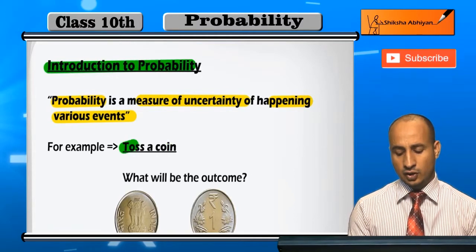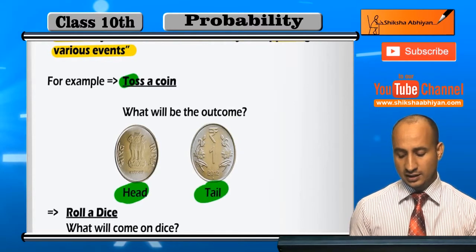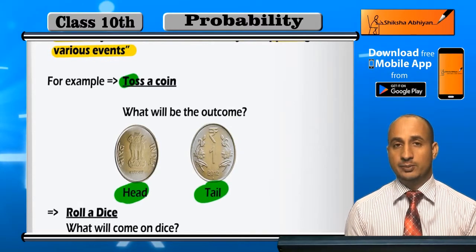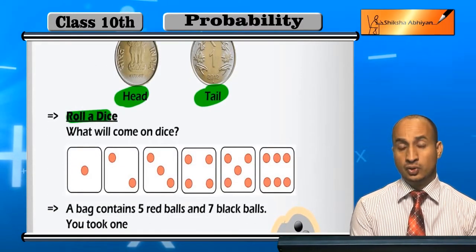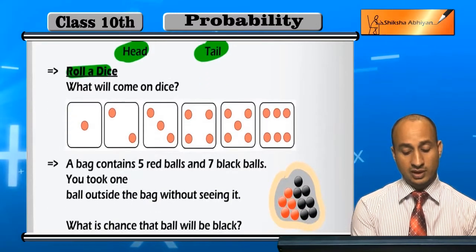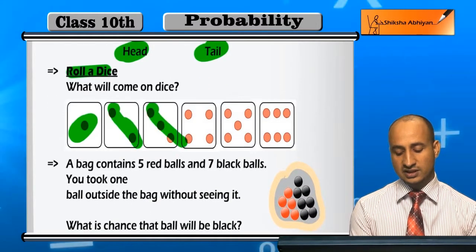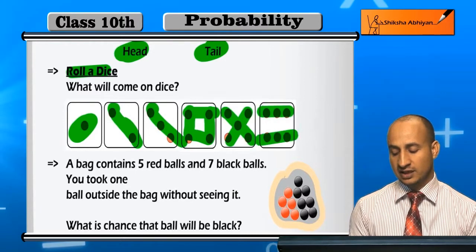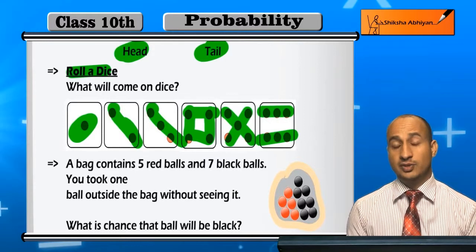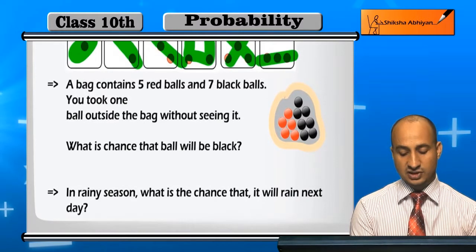For example, if you do a coin toss, the outcome will be head or tail. You can tell the probability — how many chances are there for head and for tail. Then if you roll a dice, you know the outcome will be 1, 2, 3, 4, 5, or 6. So how many chances are there? Probability tells you what will happen.